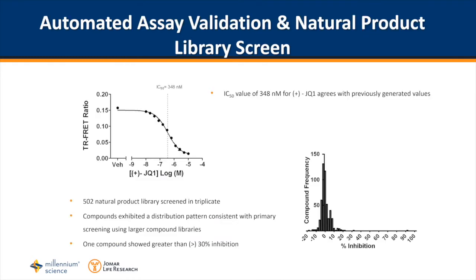Here we demonstrate the combination of a homogeneous time-resolved fluorescence energy transfer TRFRET assay with an automated instrumentation and high throughput screening multimode microplate reader that monitors BRD4 activity. An agonist EGF titration experiment was completed to ensure we are seeing the correct response from the agonist in the automated assay.